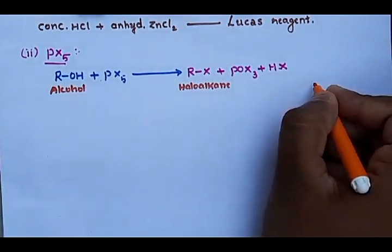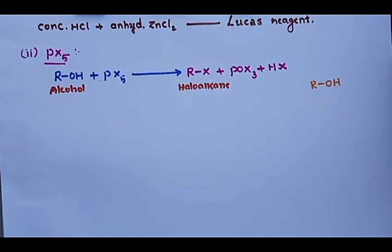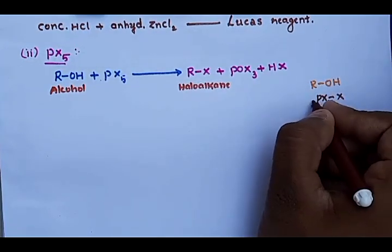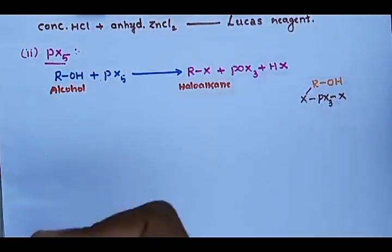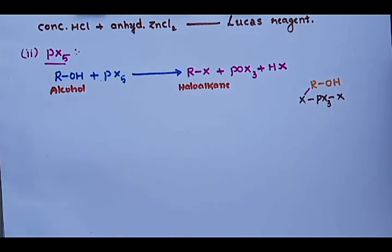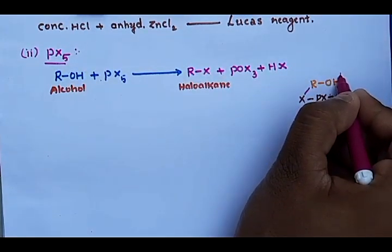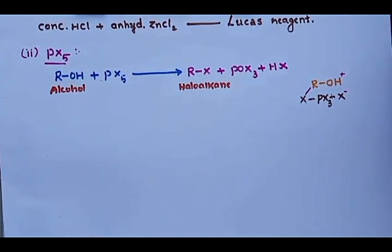PX₅ can be split into PX₃ and X₂. The alcohol molecule undergoes cleavage: R⁺ separates and combines with X⁻ to form RX. The OH bond undergoes cleavage — O carries negative charge, H carries positive charge. H⁺ and X⁻ combine to form HX, and the remaining part is POX₃.